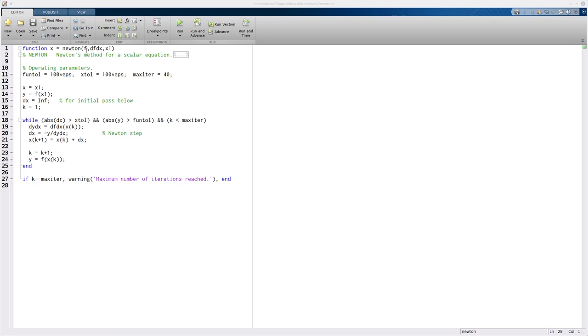So here I have a function called Newton. As input, it accepts three things. f is the function that we're finding the root of, df dx is a function for its derivative, and x1 is the starting point.